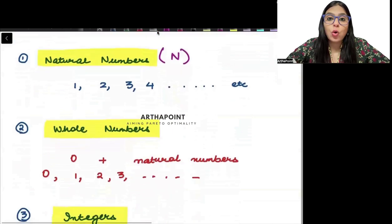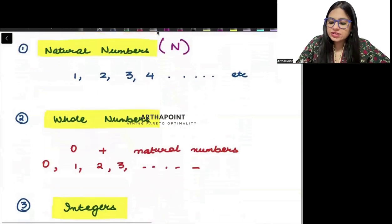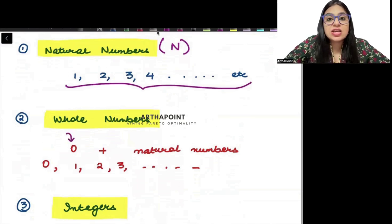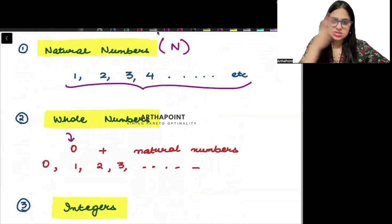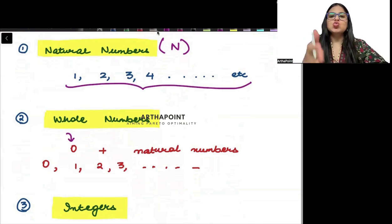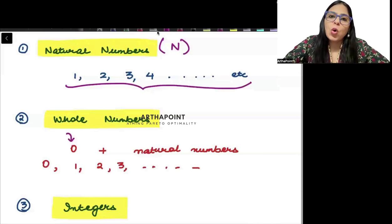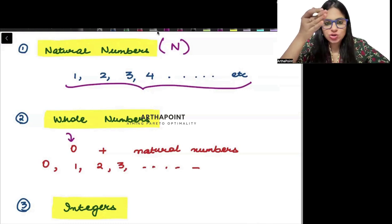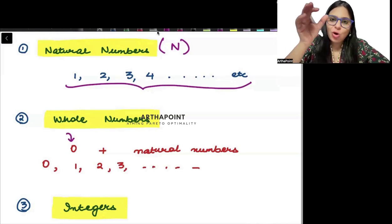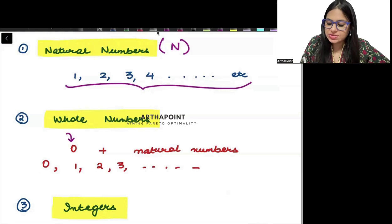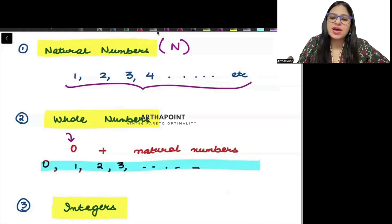Then we have whole numbers. If in these natural numbers I just include 0, that means 0 and all natural numbers — 0, 1, 2, 3, 4 and so on — then it becomes whole. Natural numbers along with 0 become whole numbers, so your whole numbers will be 0, 1, 2 and so on.